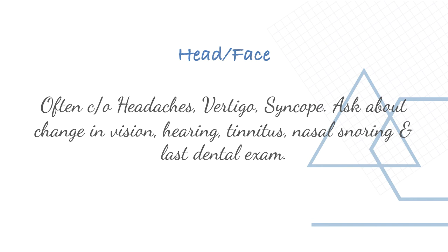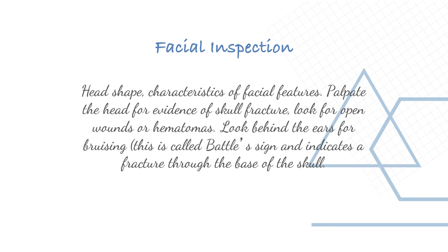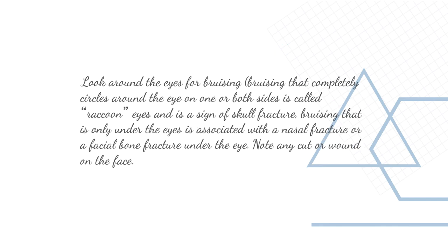For head and face, patients often complain of headaches, vertigo, and syncope. Ask about changes in vision, hearing, tinnitus, nasal snoring, and last dental exam. During facial inspection, assess head shape and characteristics of facial features, and palpate the head for evidence of skull fractures. Look for open wounds or hematomas. Look behind the ear for bruising — this is called Battle's sign and indicates a fracture through the base of the skull. Bruising that completely circles the eye is called raccoon eyes and indicates a basal skull fracture; bruising only under the eyes is associated with a nasal or facial bone fracture.